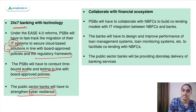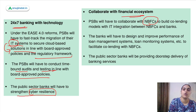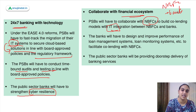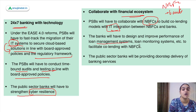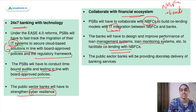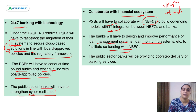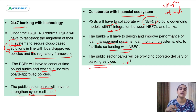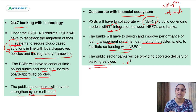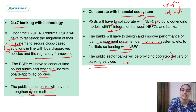The next initiative is to collaborate with the financial ecosystem. Public sector banks need to collaborate with NBFCs to co-lend and build co-lending models with IT integration. Banks will have to improve their loan management and monitoring systems to facilitate co-lending with NBFCs. Public sector banks will also be providing doorstep delivery of banking services — whether through a banking agent visiting you or through digital platforms — to ensure all banking services reach the customers.